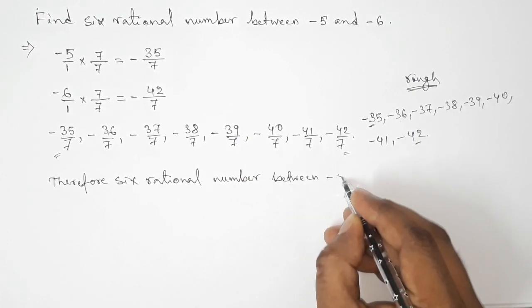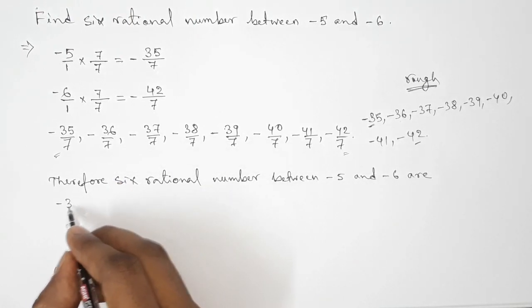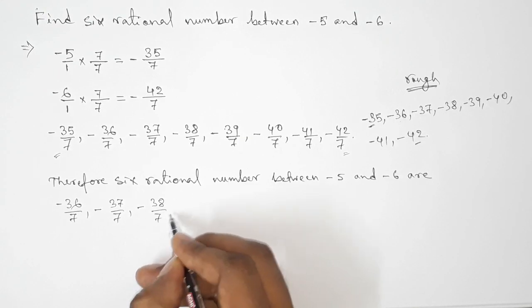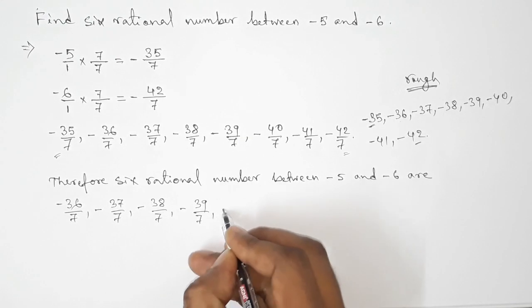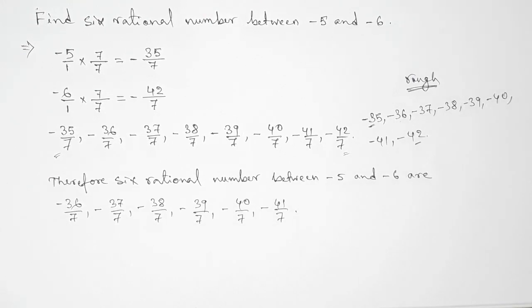The first one is minus thirty-six by seven, then minus thirty-seven by seven, then minus thirty-eight by seven, then minus thirty-nine by seven, then minus forty by seven, then minus forty-one by seven. So that's all, thanks for watching.